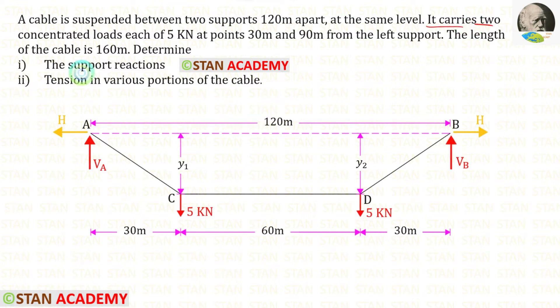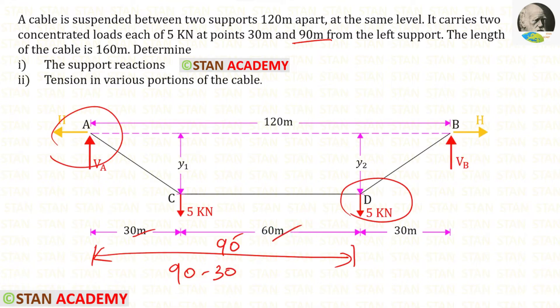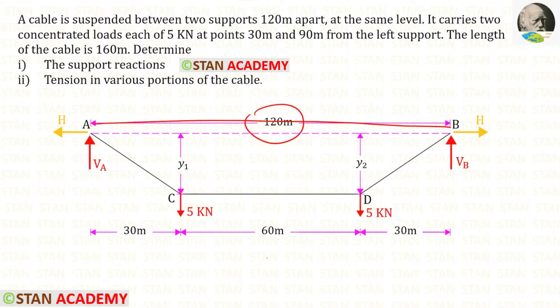It carries two concentrated loads each of 5 kilonewtons at points 30 meters and 90 meters from the left support. This load is at 30 meters from the left support and this load is at 90 meters from the left support. 90 minus 30, we will get 60. We know the total span 120. 120 minus 90, we will get 30.